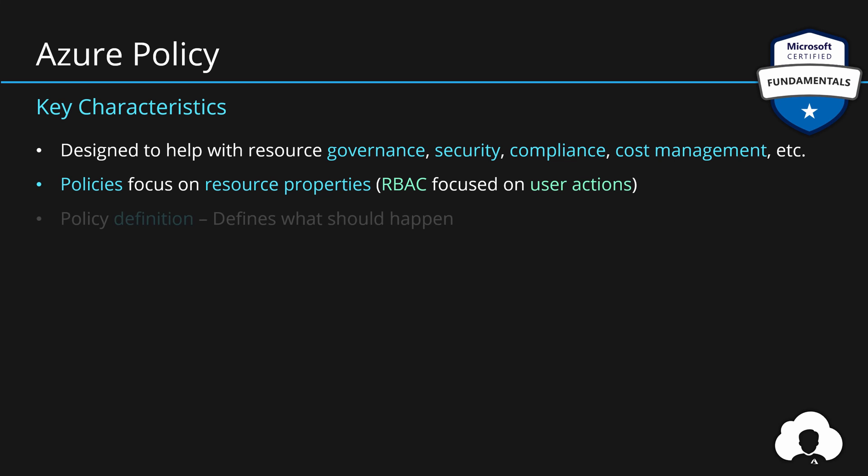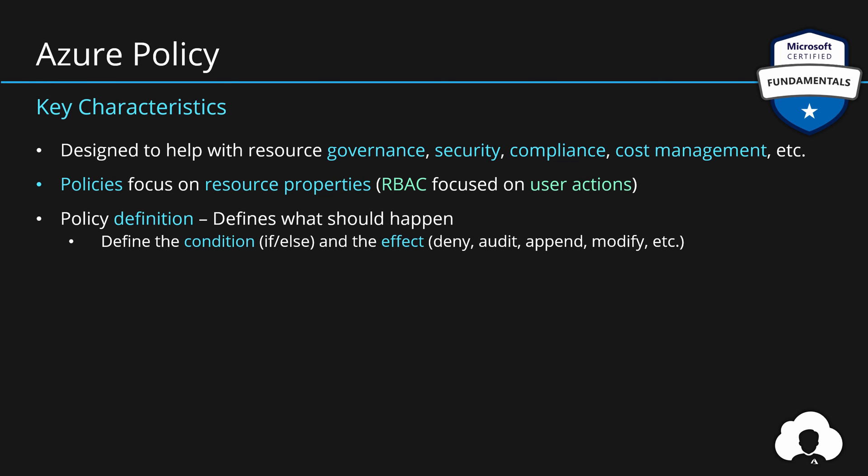There are a few keywords that you should remember. The first one is policy definition — this describes which properties should be checked and what should happen. It does that by specifying the condition of those properties — it's a simple if-else statement. And then based on those statements, you apply an effect. There are multiple effects you can apply. In our demo we used the deny effect — deny stops the deployment from happening. Besides this effect, you can also apply the audit effect, which will allow for the deployment to happen but will raise a warning in the overview panel showing that this resource is not compliant. Append and modify are also very interesting because they allow Azure administrators to modify the deployment before it happens.